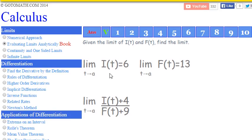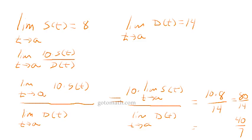We're in this section right here at gotomath.com. So we're looking at two limits that are already given up here at the top, and we want to find the limit as t approaches a of I(t) plus 4 over F(t) plus 9. We're utilizing all those rules, these properties of limits. It's kind of like what we're going over here.